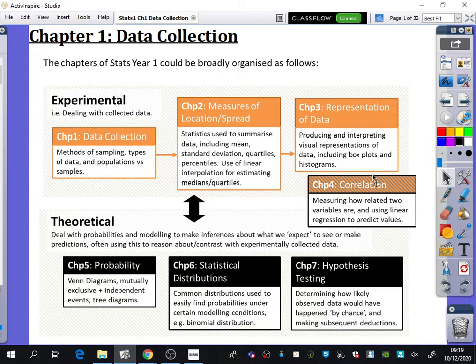The chapter on correlation has to do with scatter diagrams. That falls between both halves because there's a mixture of real-life data collection and theoretical statistics.